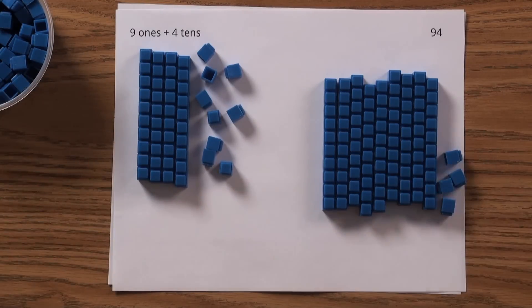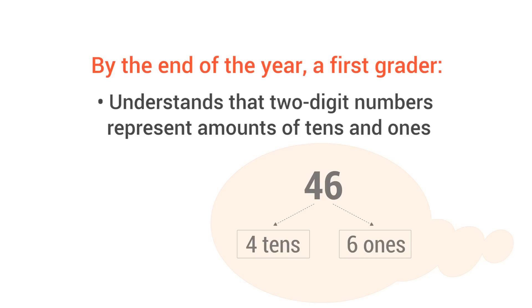So how do you know your child's on track? By the end of the year, a first grader understands that two-digit numbers represent amounts of tens and ones.